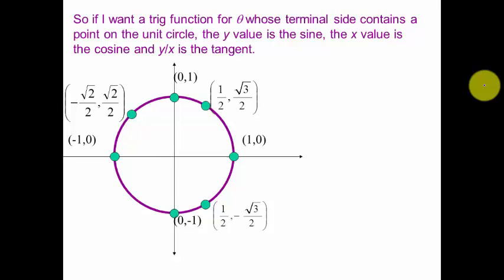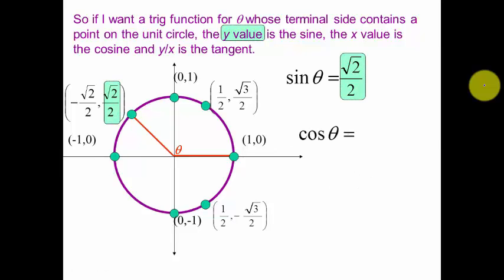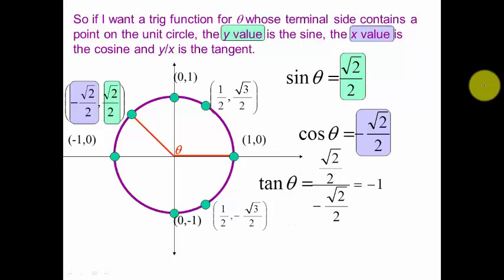So now basically if we want a trig function and they give us this point on the terminal side, we can easily answer that by looking at these points on the unit circle in any given place. If we wanted to know the sine of theta, we would just simply take the y value. If we wanted to know the cosine of this angle, we would simply take the x value. It makes it very easy to get at these trig functions. Tangent, we would do y over x.